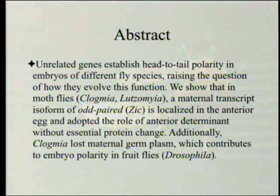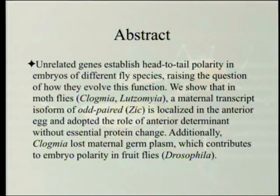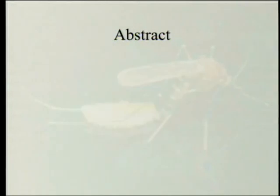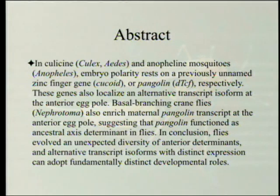The paper shows that in moth flies Clogmia and Lutzomyia, a maternal transcript isoform of odd-paired — which is the name of a gene — is localized in the anterior egg and adopted the role of anterior determinant without essential protein change. Additionally, Clogmia lost maternal germplasm, which contributes to embryo polarity in fruit flies. Fruit flies get maternal germplasm that helps make the head at one end, though there's another determinant as well.